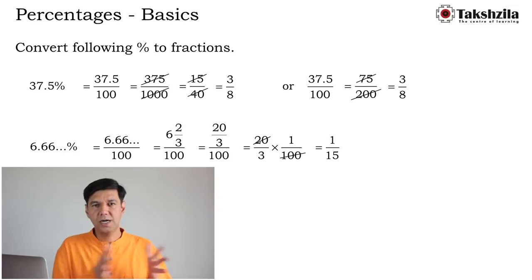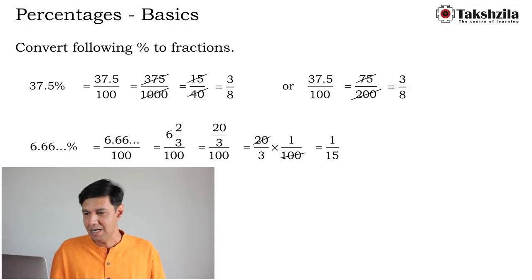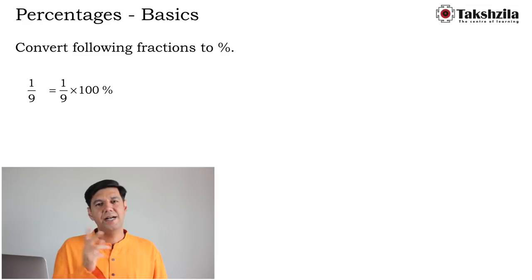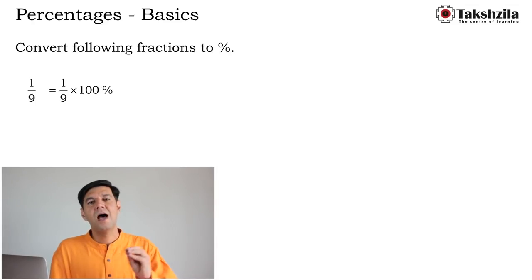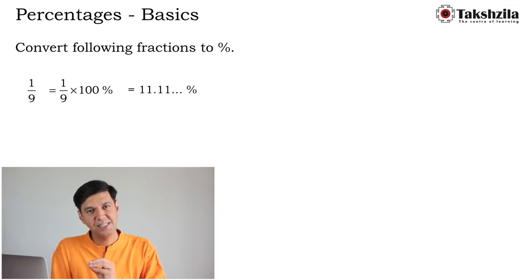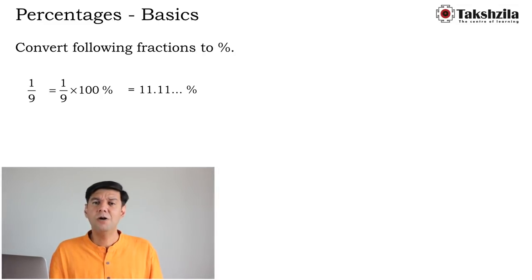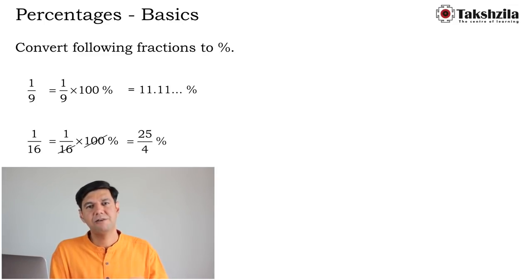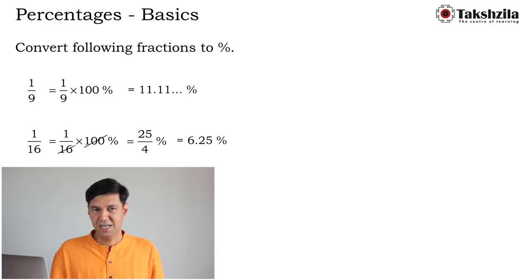Now the reverse: convert fractions to percentages. For 1/9: multiply by 100. Since 100 is not divisible by 9, divide: 9 × 11 = 99, remainder 1, giving 11.111...%. So 1/9 = 11.11...%. For 1/16: (1/16) × 100. Cancel: 100/16 = 25/4 = 6.25%. So 1/16 = 6.25%.